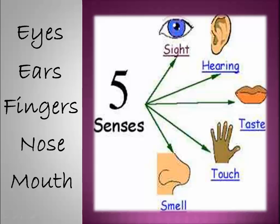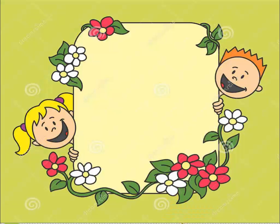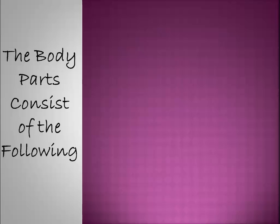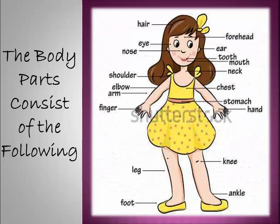Now we're going to review the parts of our body. Let's see them together. The body parts consist of the following. We have here hair — can you see the hair of the girl? And this is her forehead.